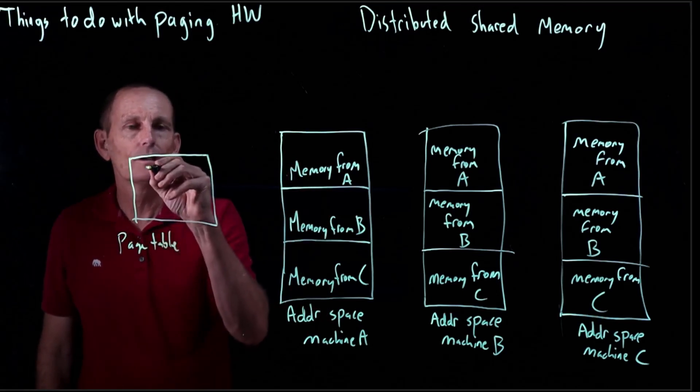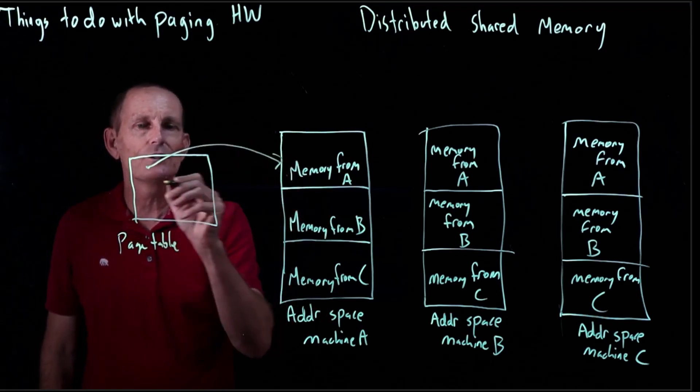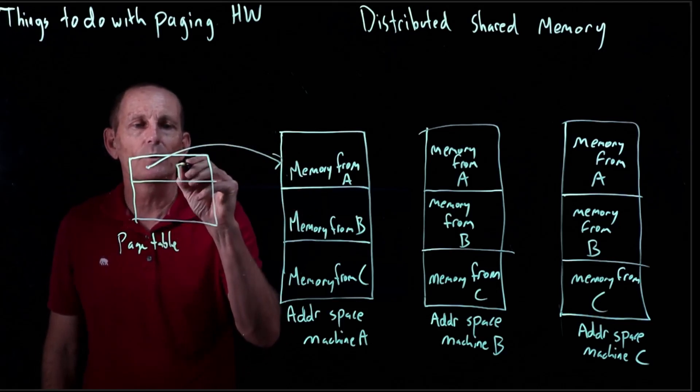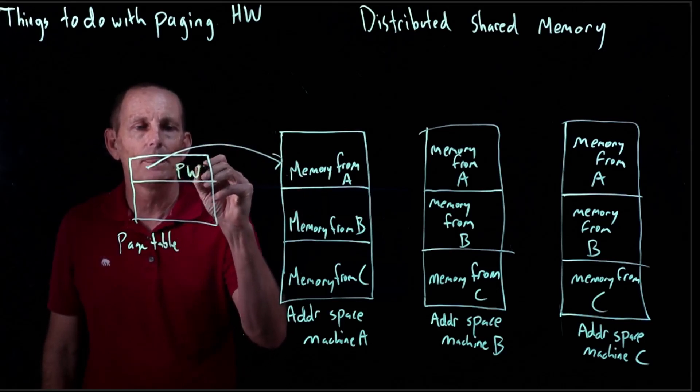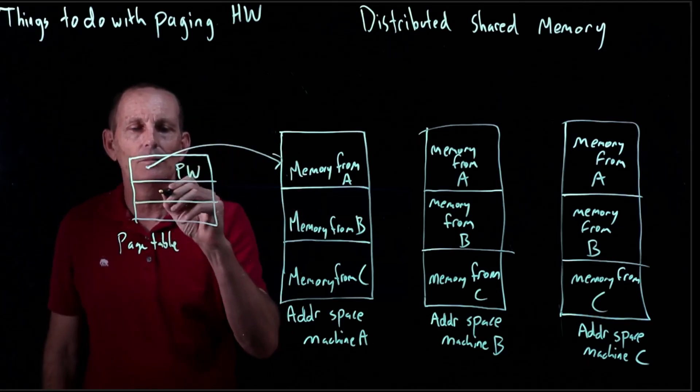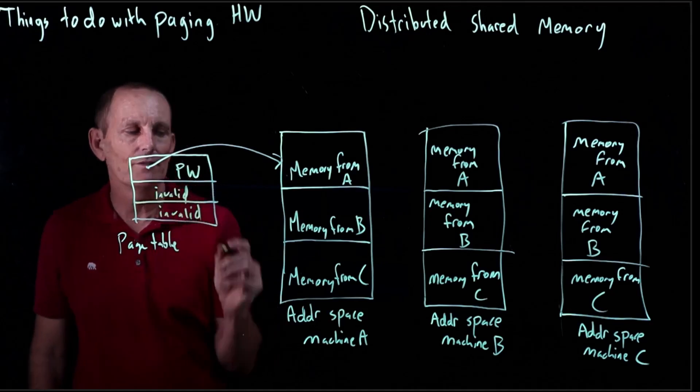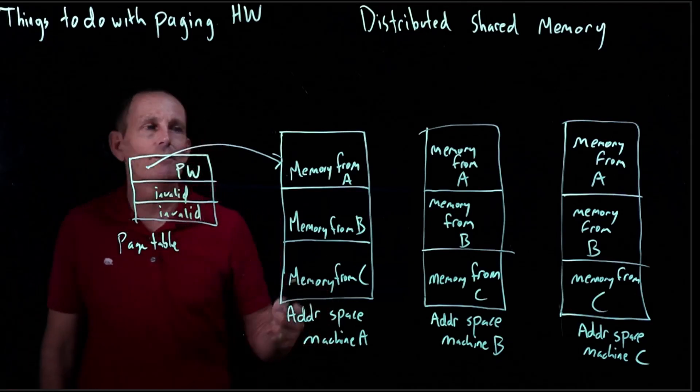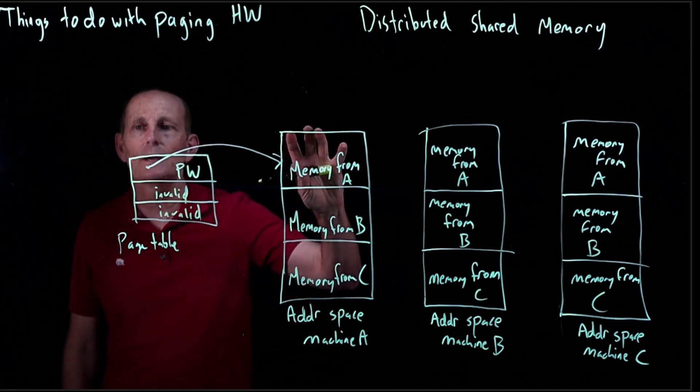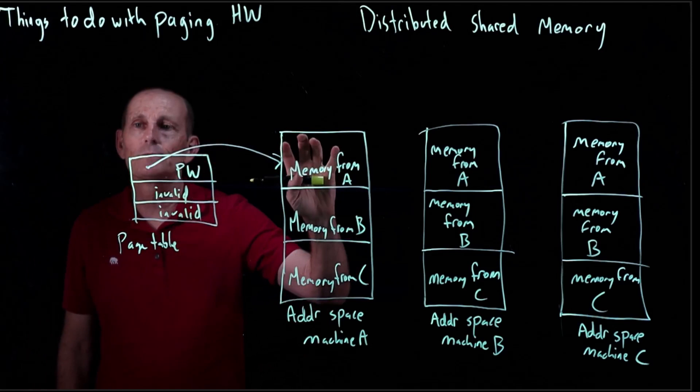The first would have the physical page number there and this would be present and writable. The second would be invalid and the third would be invalid. So on machine A, if it tries to write this portion of the address space, it would be able to read and write to it.